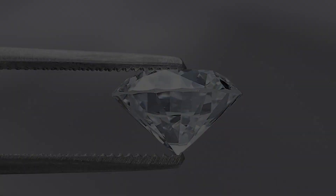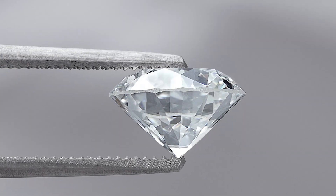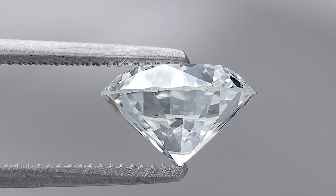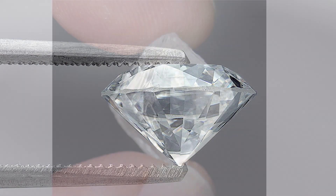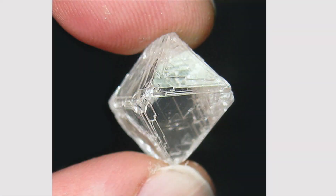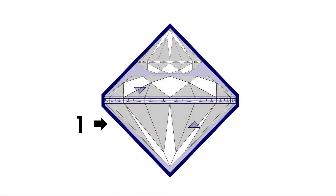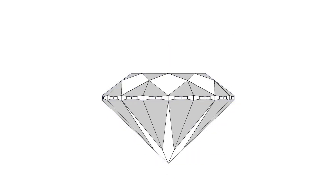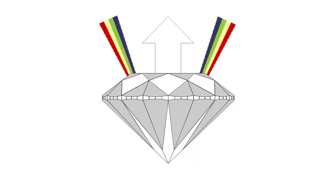One shape is analyzed even further: the round brilliant, which is most popular for two reasons. First, because producers can maximize recovery from a rough crystal by cutting two round brilliants from it, and second, because it is most efficient at returning the light it gathers back to the viewer's eyes.